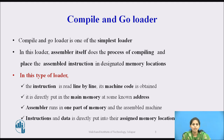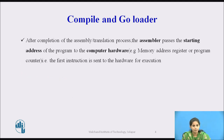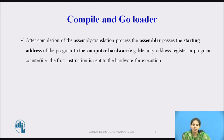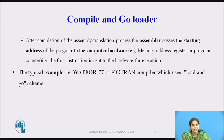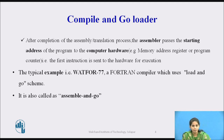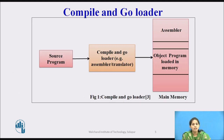The assembled machine instructions and data are directly put into their assigned memory locations. After completion of the assembly or translation process, the assembler passes the starting address of the program to the computer hardware — either to the memory address register or to the program counter — so that the first instruction is sent to the hardware for execution. A typical example of the compile and go loader is FORTRAN 77, a FORTRAN compiler that uses the load and go scheme. This loading scheme is also called the assemble and go loader.